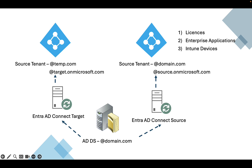To solve this problem, we bought SCP licenses for the target tenant for at least one month. All licenses were duplicated, and in both tenants we got the same list of licenses. We started to migrate Intune managed devices, and right after, users had to log in to the new tenant using the temporary domain temp.com. Enterprise applications were pre-created for the target tenant and were waiting for final changes.